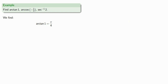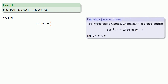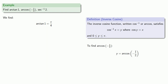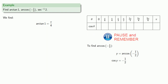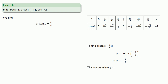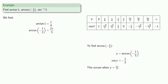Arccos is another way of writing inverse cosine. To find arccos of negative 1/2: y equals arccos of negative 1/2 means the cosine of y is negative 1/2. Since y is between 0 and pi, we want cosine values between 0 and pi. We find the angle whose cosine is negative 1/2 is 2pi thirds.